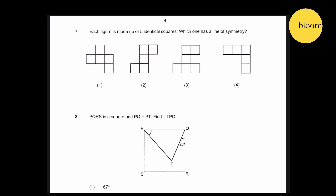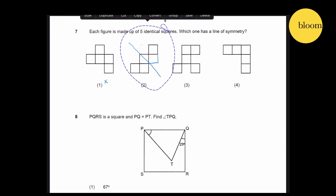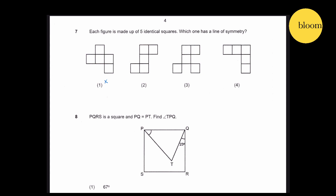Question 7: Each figure is made up of 5 identical squares. Which one has a line of symmetry? You can't find a line of symmetry for options 1 or 3. Option 2 would be very close only if you removed part of it, but that's not what we're looking for. You can't find one for option 4 either — wait, yes, number 4 is the answer.